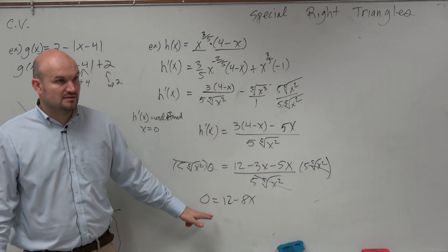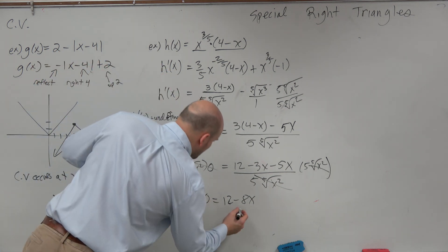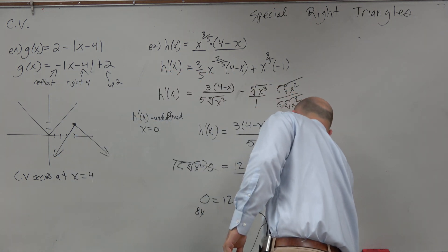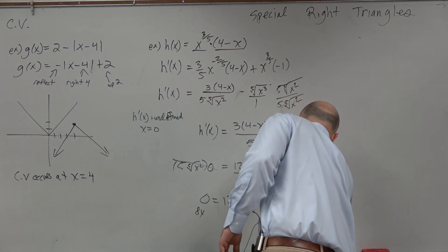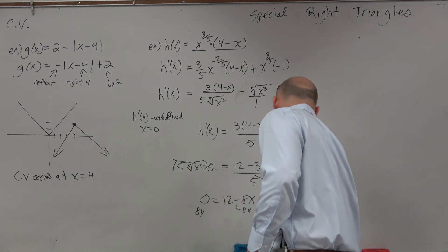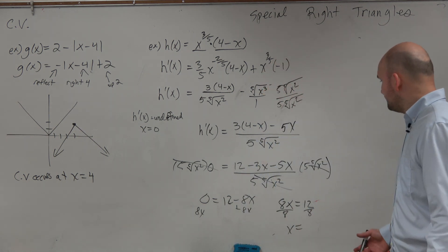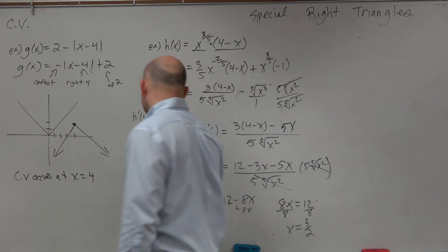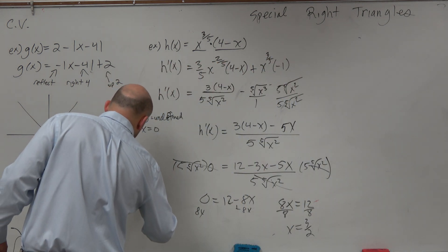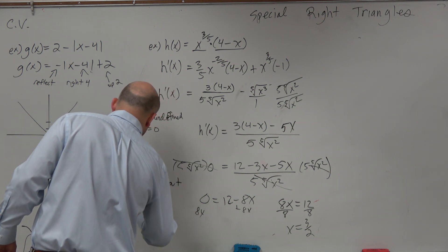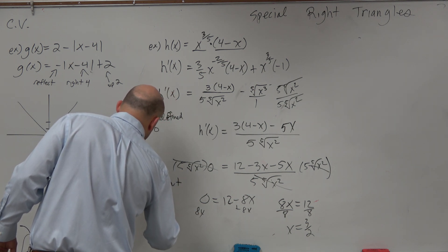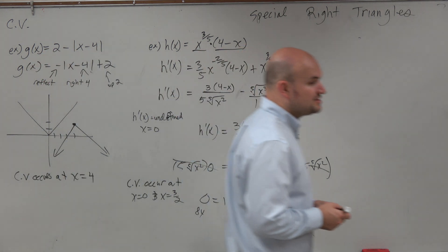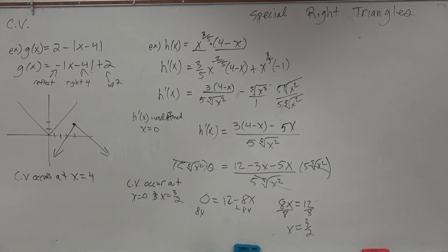Can we now solve for x? So subtract — or just add 8x to both sides. Therefore, we have 8x equals 12. Divide by 8, and x equals 12/8, which you can simplify by dividing by 4 on top and bottom, giving you 3/2. So our critical values occur at x equals 0 and x equals 3/2. Please let me know if you have any questions or confusion on where I got any of those values.